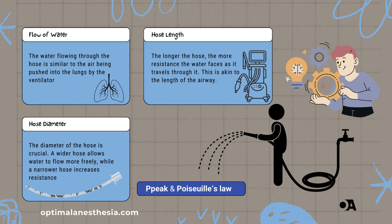If the nozzle is partially blocked, you need to turn up the faucet pressure to get the same amount of water out. In the same way, conditions like bronchospasm, where the airways constrict, increase airway resistance and peak airway pressure. Understanding Poiseuille's law helps us grasp how changes in airway conditions affect the pressure needed to ventilate a patient. In summary, just as a kinked or narrow garden hose needs more pressure to deliver water, a narrowed or obstructed airway requires higher peak airway pressure to deliver air effectively to the lungs.